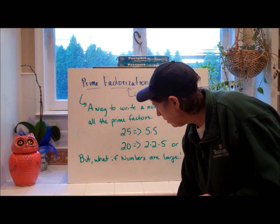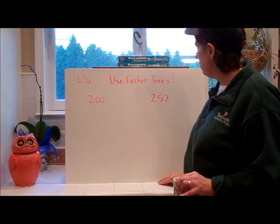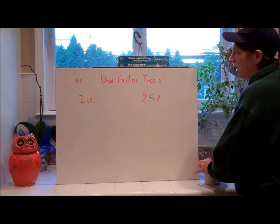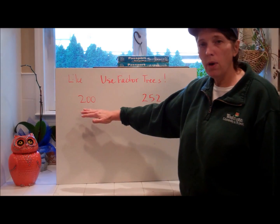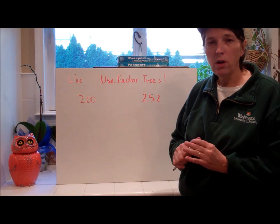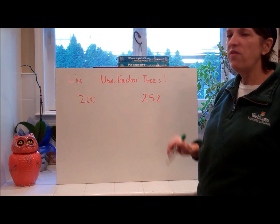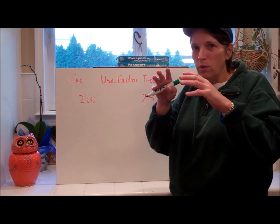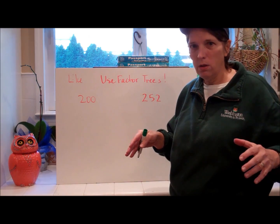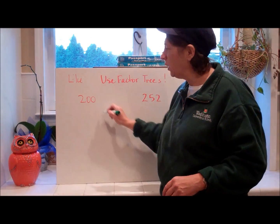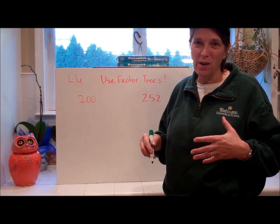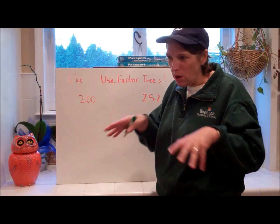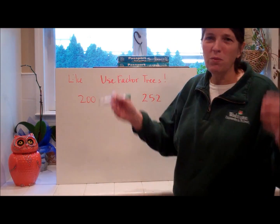If the numbers are larger, remember those divisibility rules we learned? This is exactly why you use them — so you can find the prime factorization of 200 without getting confused. We're going to use factor trees. The tree goes down as you factor — it looks like a regular triangle rather than an inverted one. Think of it like a tree with roots that split off going down.